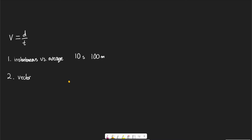Let's say we start out here, travel in a circle, and end up where we started. What is the speed that we traveled? The speed would be the distance traveled over the time — so if the circle were 5 meters and it took 2 seconds, our speed was 2.5 meters per second. But velocity, because it is a vector quantity, actually depends where we go. In this case, our velocity is actually 0, because our starting point and ending point are the same.